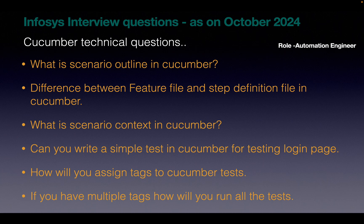Difference between feature file and step definition file in Cucumber — this is a common question asked in most interviews. The feature file contains code written in plain English, that is in Gherkin language, whereas the step definition file actually contains the Selenium code written. That is the major difference. The next question: what is scenario context? It is a class that stores information in the form of key-value pairs — it's a class to hold test data information specifically.